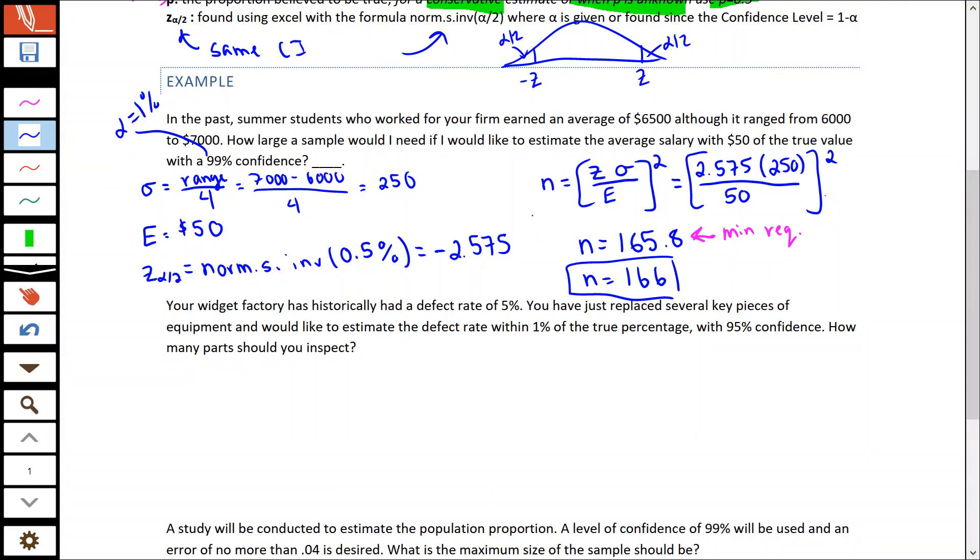In this situation, it's told us we have a historical defect rate of 5%. So it's telling us our P is 5%, meaning Q is going to be 95%. We'd like to estimate the defect rate within 1% of the true percentage, so our error is going to be 1%. The thing about our percentages when we do these calculations is they all need to be decimals. So just so we don't make any mistakes, I'm going to put those in as decimals.